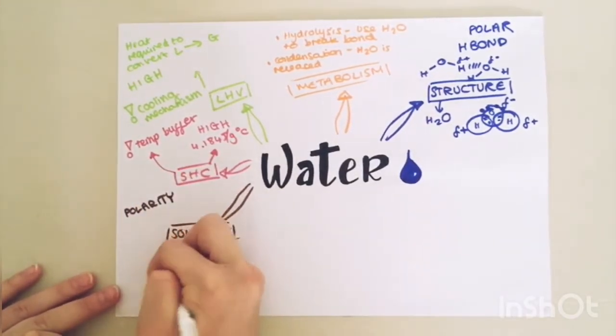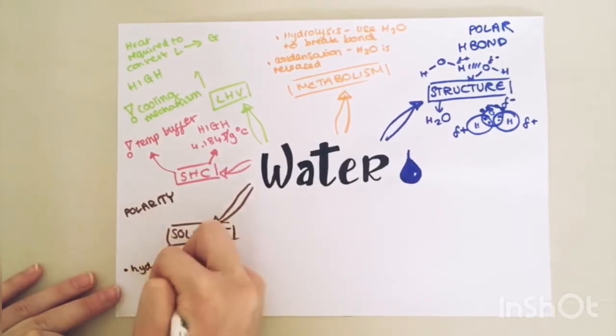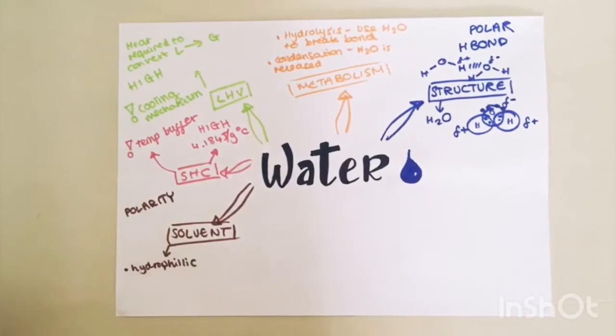Water will dissolve hydrophilic substances. These are substances that are polar or ionic, and the water is attracted to them. So the positive end of the water molecule will be attracted to the negative ion, and the negative end of the water molecule will be attracted to the positive ions. This means that the ions get totally surrounded by water molecules and therefore they dissolve.